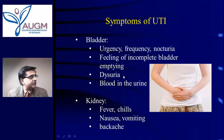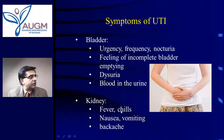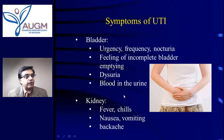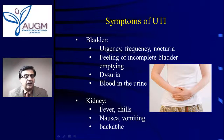These are the typical symptoms from the bladder and urine standpoint. If the infection goes up to the kidneys, it can cause fever and chills — now it's dangerous, becoming a full-body infection getting into the bloodstream, especially with chills and high temperatures such as 102–103 degrees Fahrenheit. Nausea and vomiting are signs of systemic infection, and backache is a sign of a kidney infection. Once you get into this arena, it is important to address it right away.